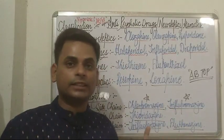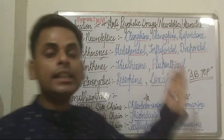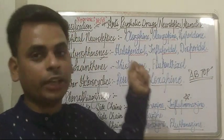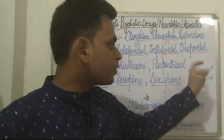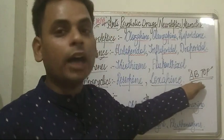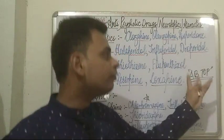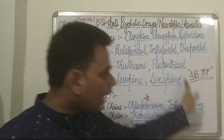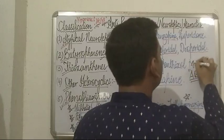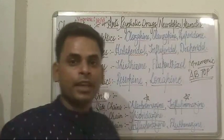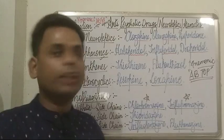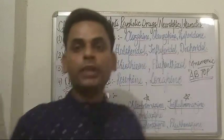So the mnemonic AB TOP helps to easily remember the classification of antipsychotic drugs. A and B are the first top alphabets of the alphabetical series, followed by T, O, and P. This mnemonic can help us remember the classification of antipsychotic drugs easily during professional exams.